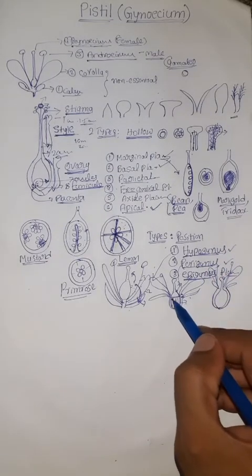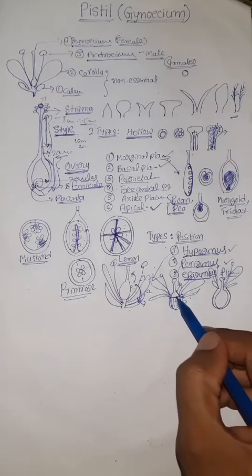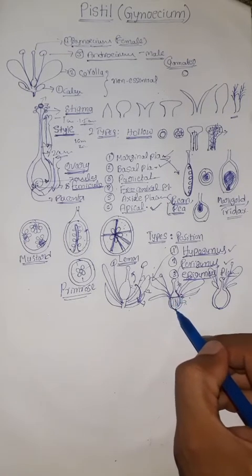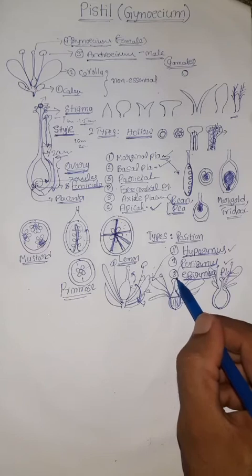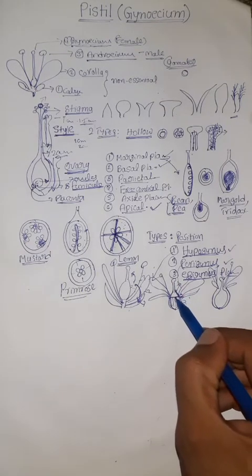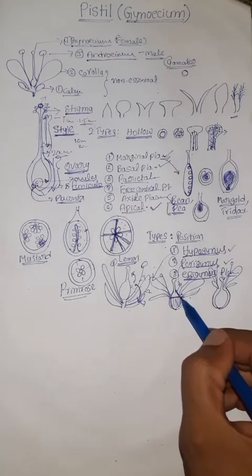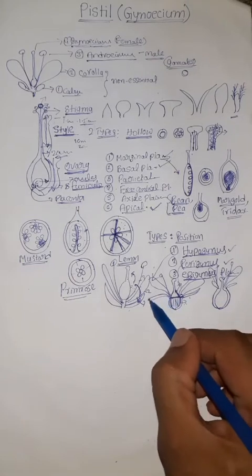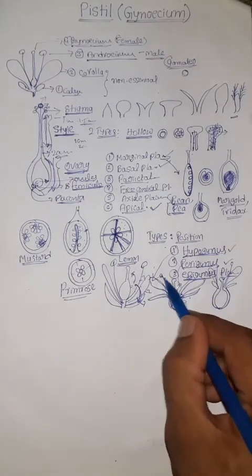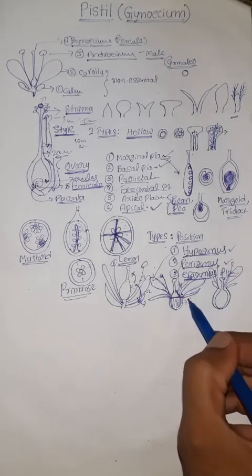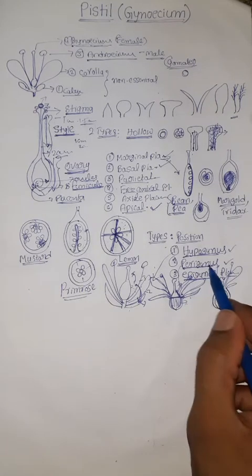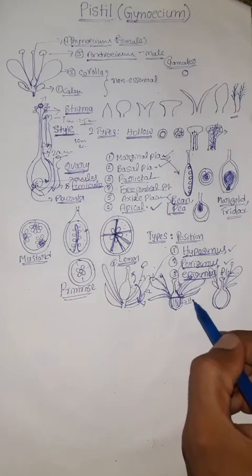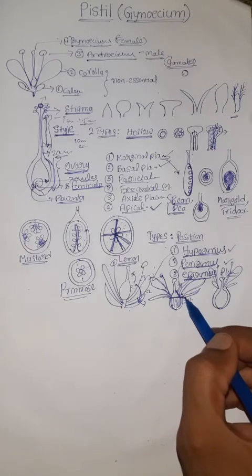In perigynous flowers, half of the ovary is submerged in a cup-like thalamus tissue and half is visible outside. The other three whorls originate from the midpoint, at the peripheral level of the ovary. That is why this type is called perigynous. It is also called half-superior or half-inferior ovary.